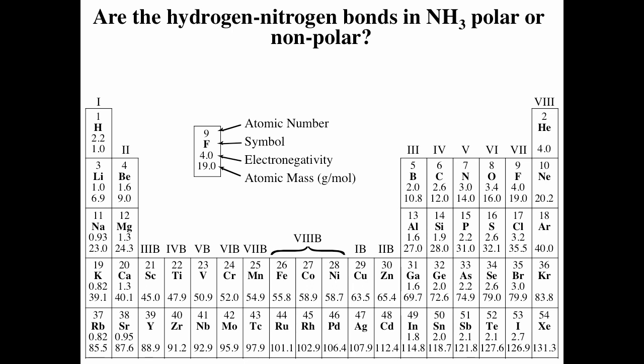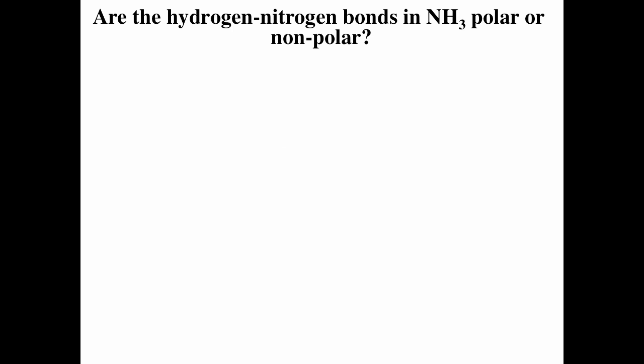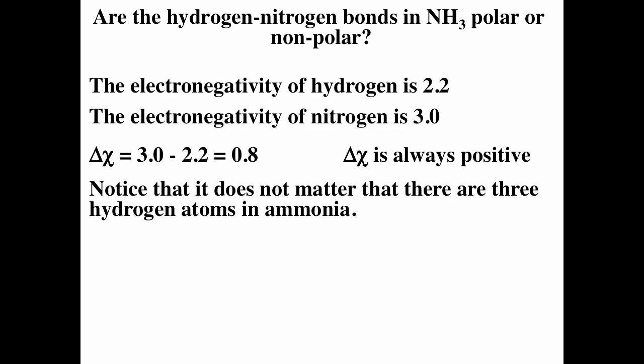Are the hydrogen-nitrogen bonds in ammonia polar or non-polar? Hydrogen and nitrogen are both non-metals, so we expect covalent bonds. The electronegativity of nitrogen is 3.0 and hydrogen is 2.2, giving a difference of 0.8. Since that's greater than 0.5, the hydrogen-nitrogen bond is a polar covalent bond.